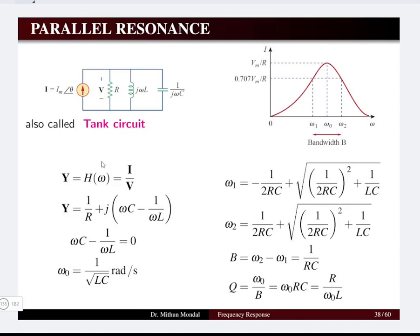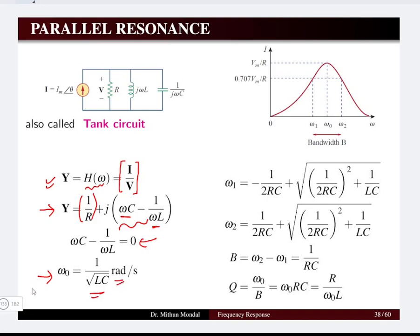For the parallel RLC network, we derive equations from the admittance point of view. Admittance Y is the transfer function given as the ratio of current to voltage. We can write admittance for the network as 1/R, which is the conductance, plus j times (Xc minus XL). We know that the imaginary part of the network will equal zero under the condition of resonance, and the resonant frequency will be 1 over the square root of LC, given in radians per second.